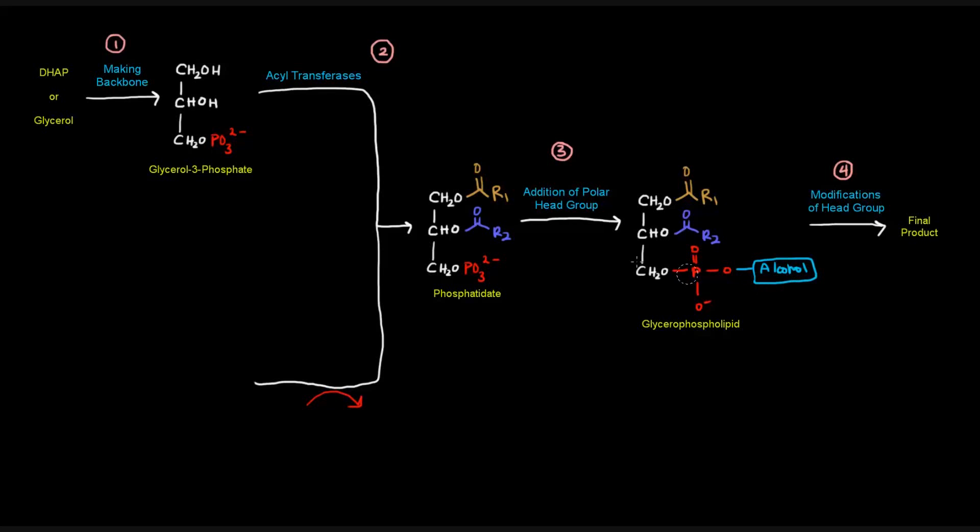One thing I do want to mention, even though that pretty much completes the introduction, is that we can also get phosphatidate from another molecule. It could come from this molecule, diacylglycerol. If we have diacylglycerol, what we can do is basically all we really would need to do is add a phosphate group to replace this OH here to get phosphatidate. And that's what we do.